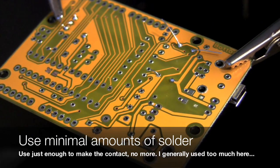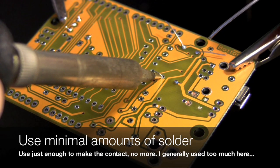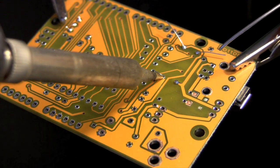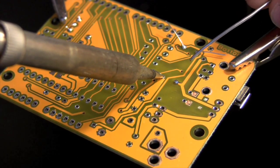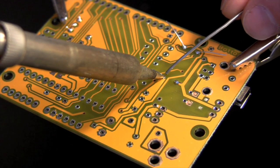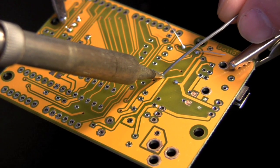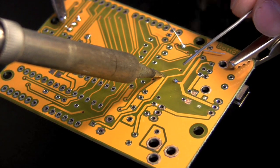If necessary, wipe excess solder off of your tip using the sponge that comes with your iron. Again, heat the pad and the leg, bring the solder in, and make a good electrical connection between the component and the board.